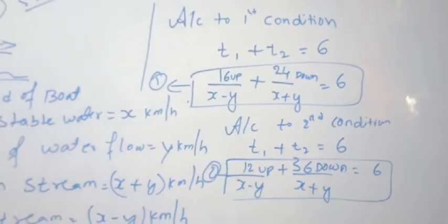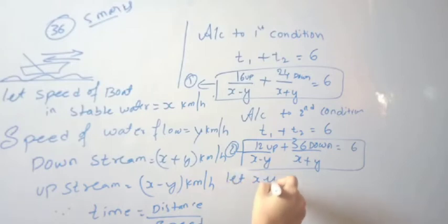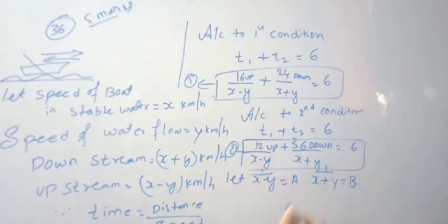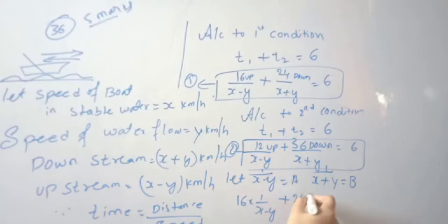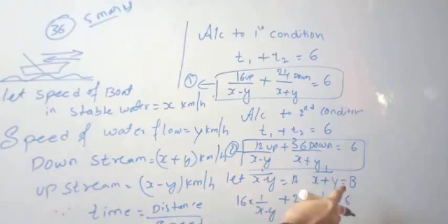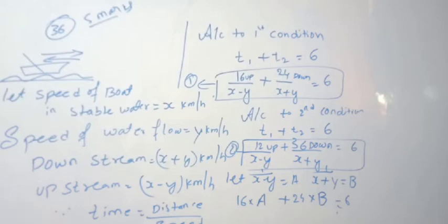To solve these two equations for x and y, let 1/(x−y) equal a and 1/(x+y) equal b. Substituting into equation 1 gives us equation 3: 16a plus 24b equals 6.